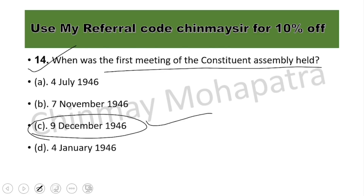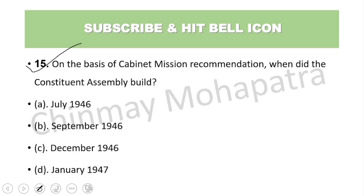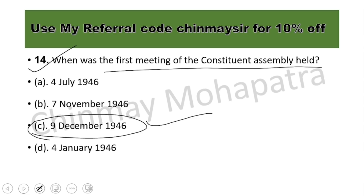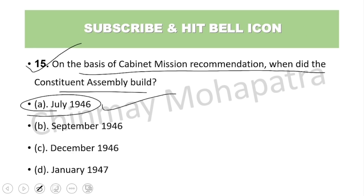Question number 15: On the basis of which recommendation was the constituent assembly formed? The constituent assembly was formed on the recommendation of the Cabinet Mission. The constituent assembly was formed in July 1946, and the first meeting was held on 9th December 1946.